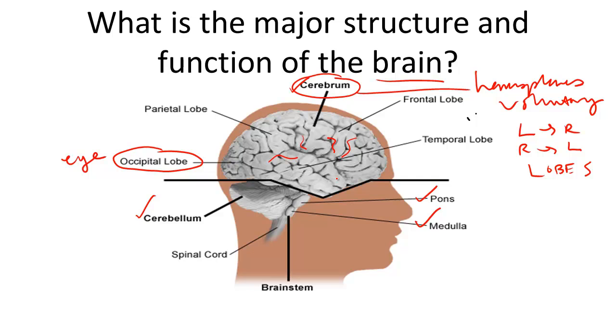The temporal lobe, on the side of the head, controls hearing. The frontal lobe over here helps with language, judgment, and decision making.